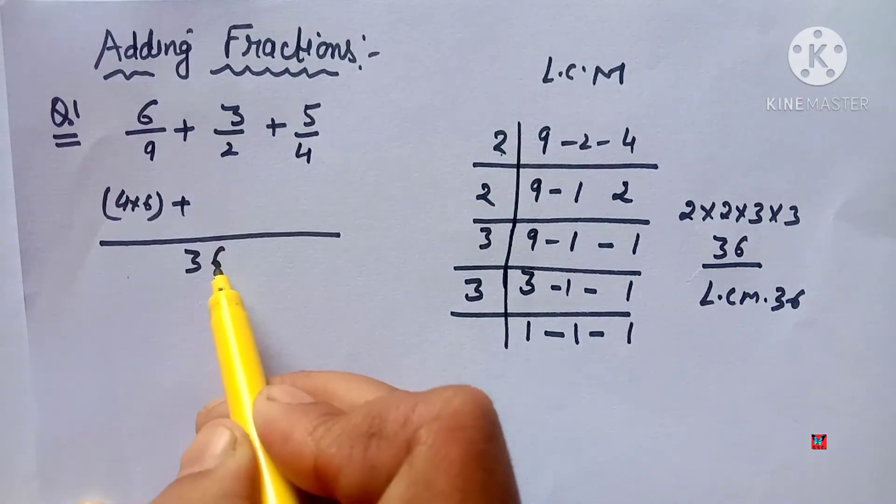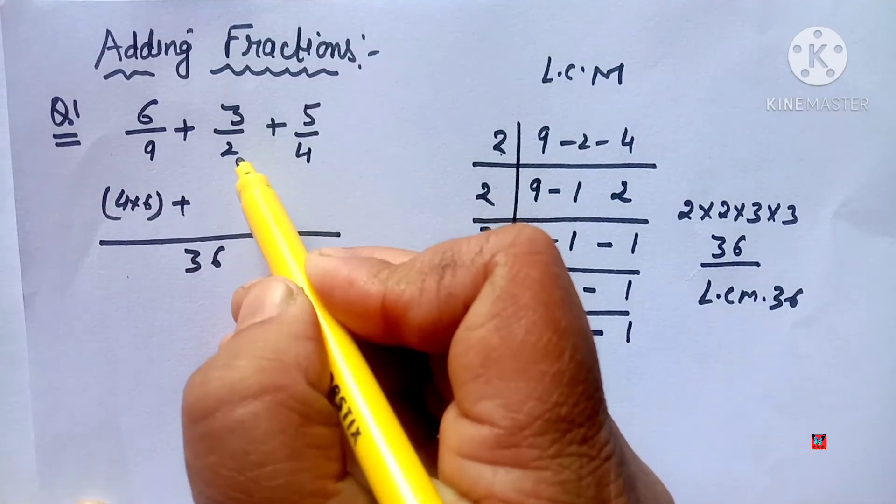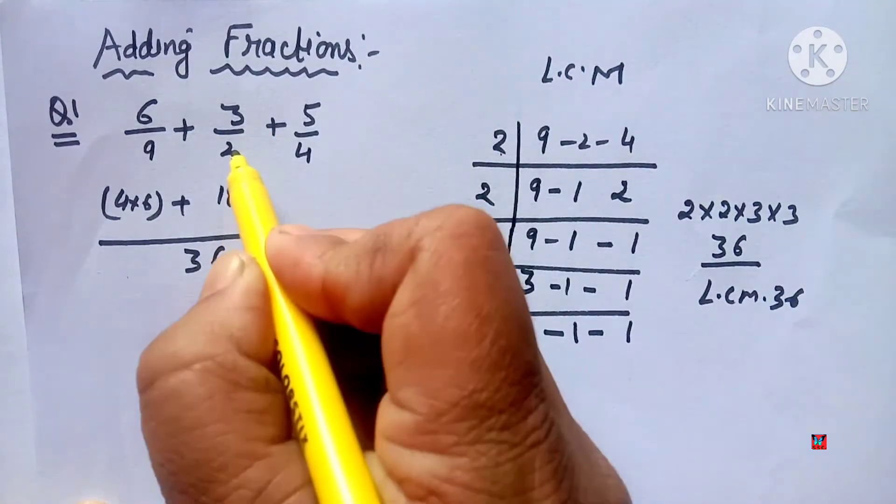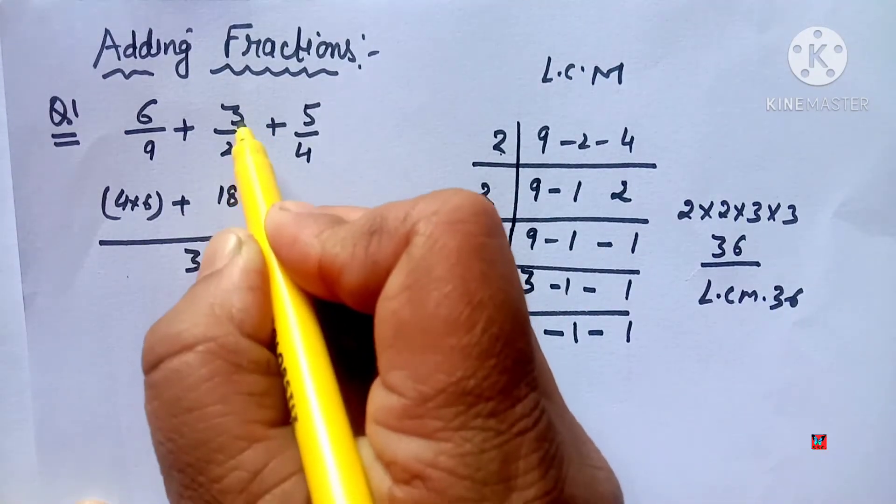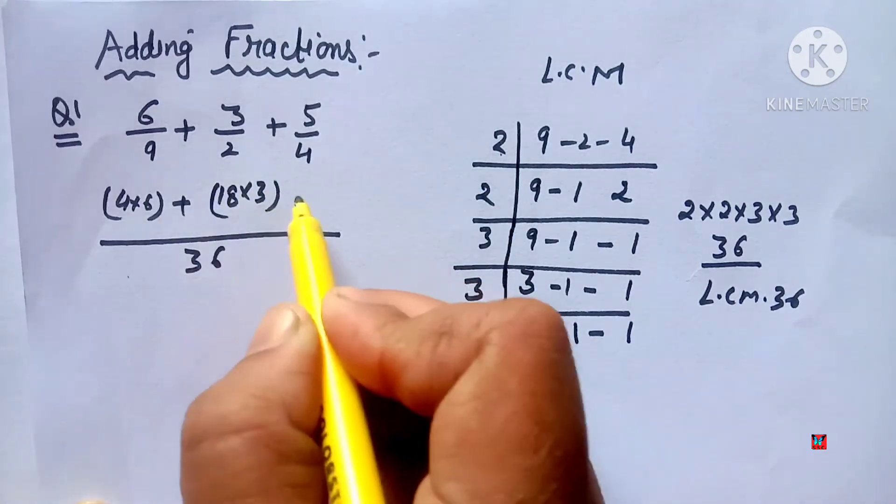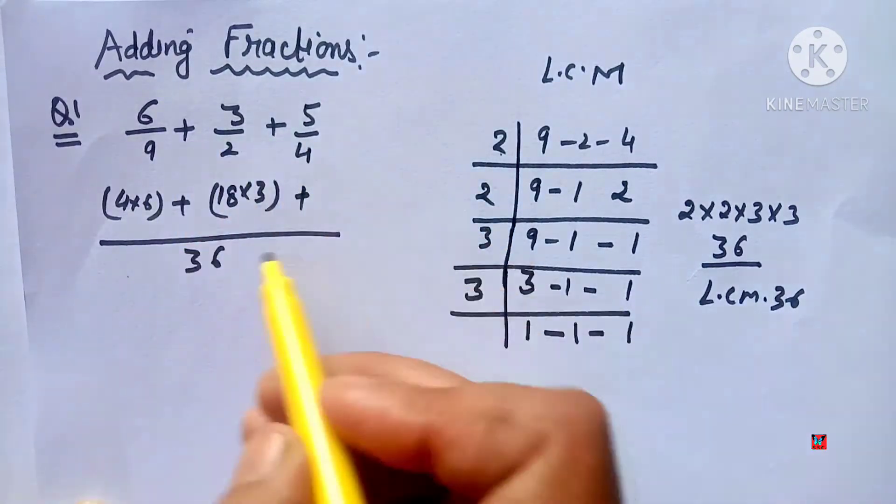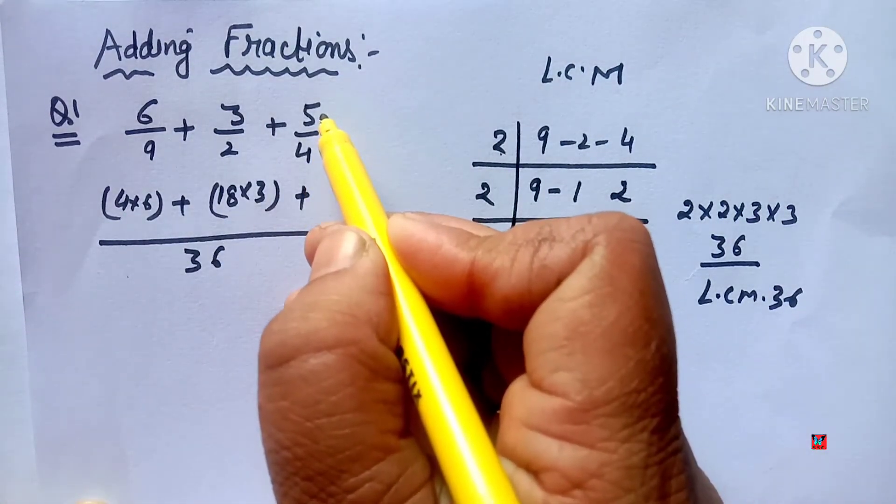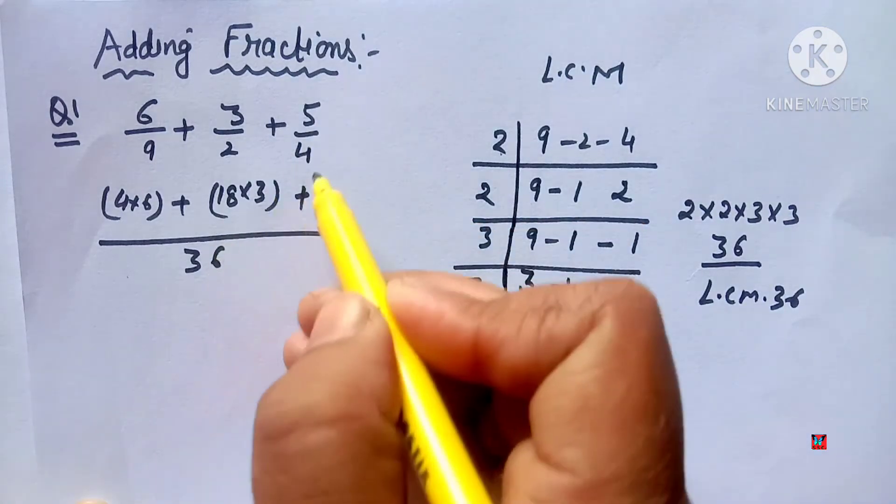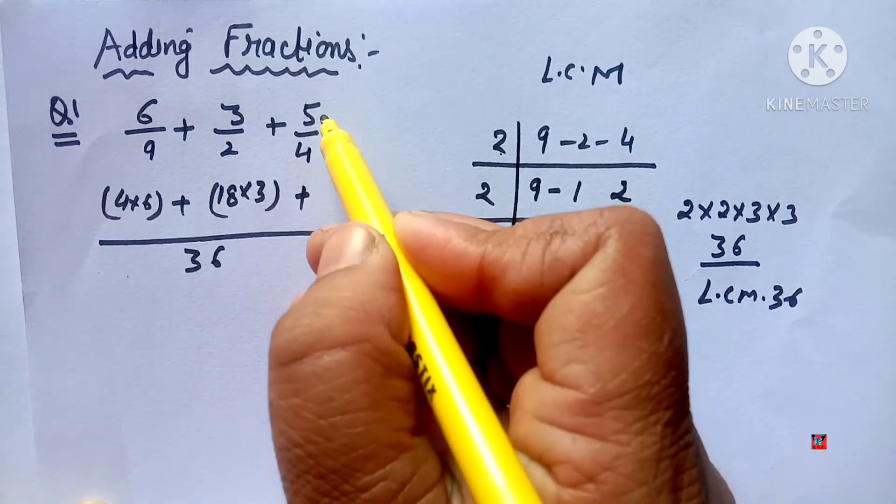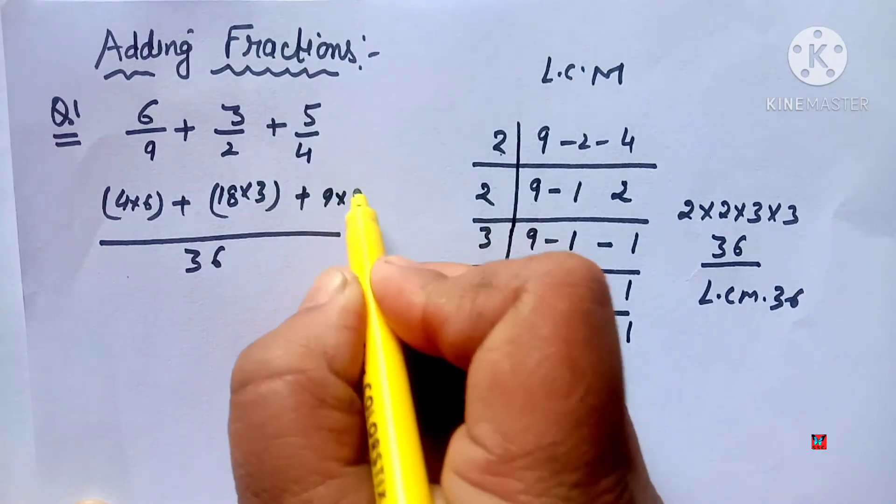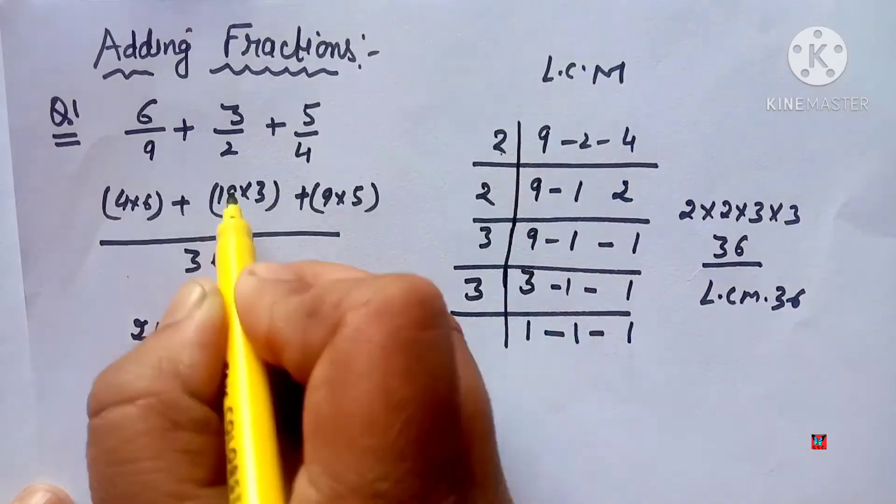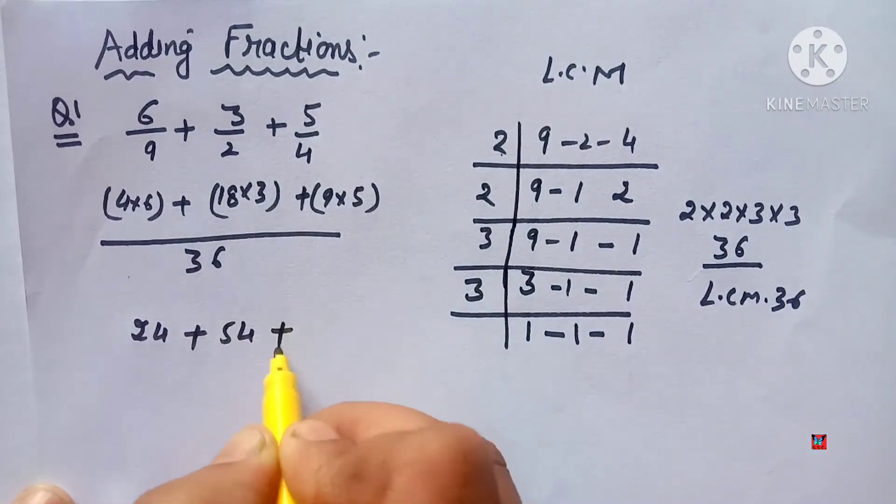Plus 36 denominator, 36 divided by 2 is 18, and the number is 3, so 18 multiply by 3. Plus here, 36 divided by 4 gives 9, and the number is 5, so we multiply: 9 multiply by 5.